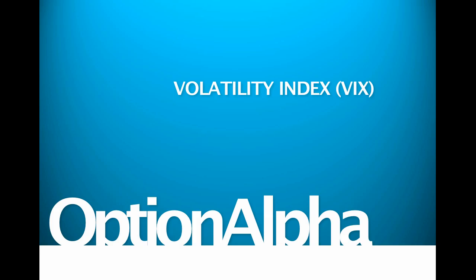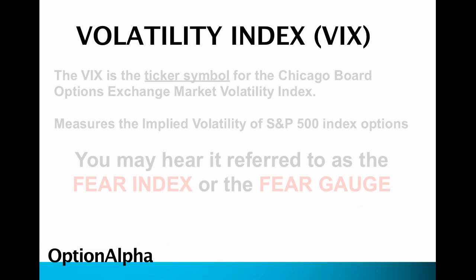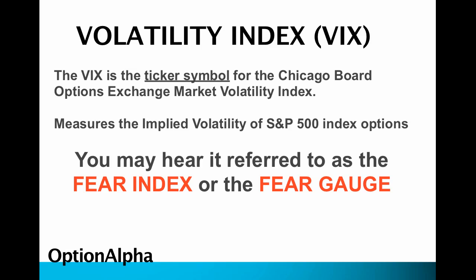Hey everyone, this is Kirk here again at OptionAlpha.com and in this video, we are going to talk about the volatility index, or more commonly referred to as the VIX. The VIX is simply just the ticker symbol for the Chicago Board of Options Exchange Market Volatility Index, and what it does is it measures the implied volatility of S&P 500 index options. That's really it in a nutshell.